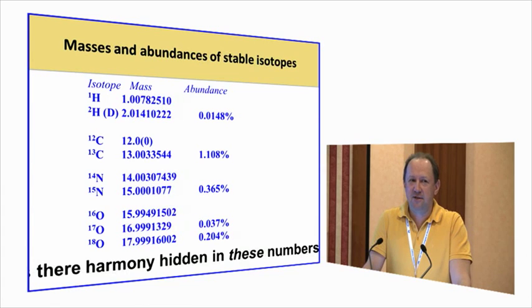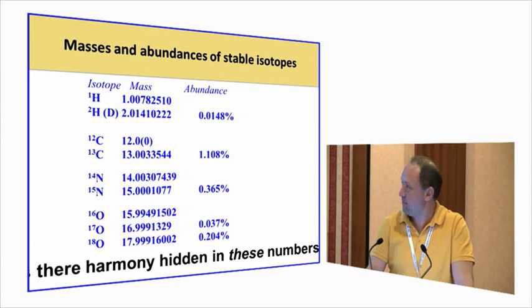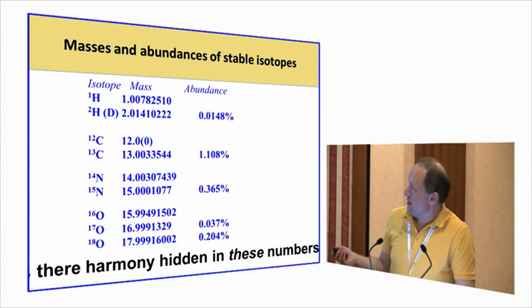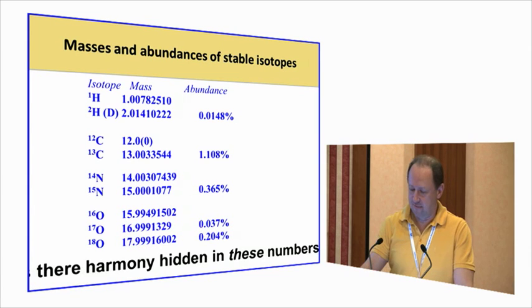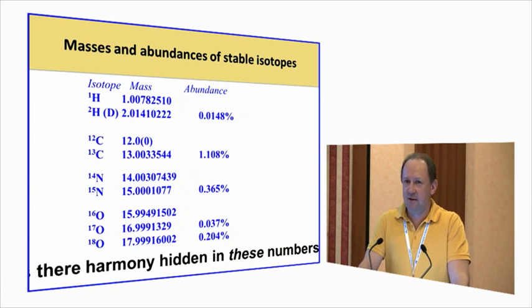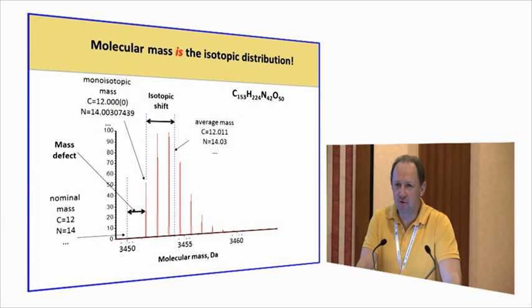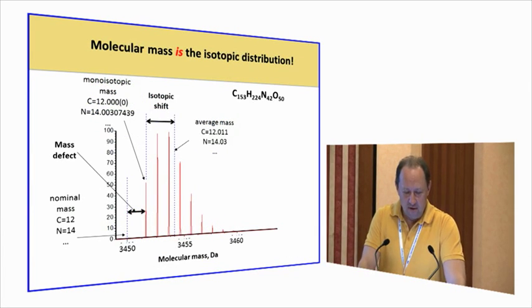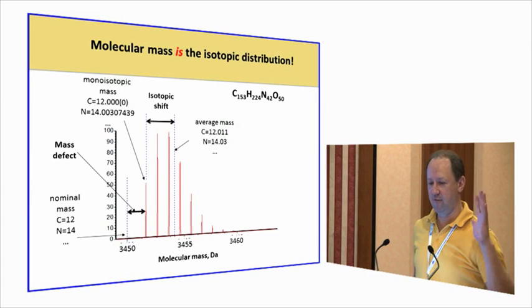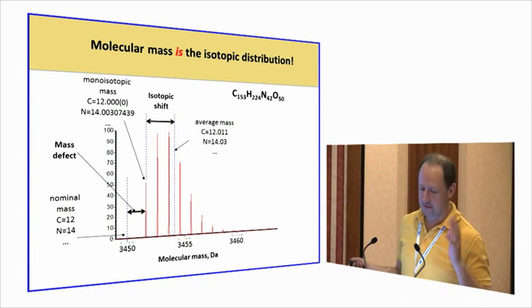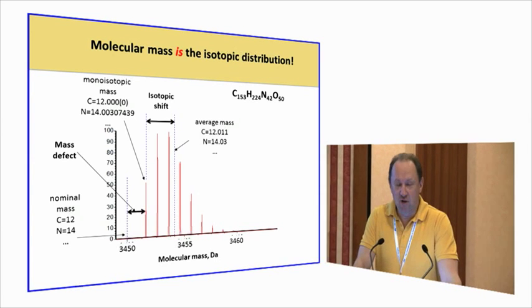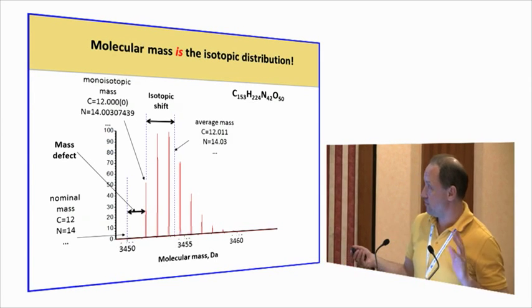This is a table that is known to all mass spectrometrists. We use this table of masses and abundances of isotopes. This is probably the most boring table in mass spectrometry, but it's also quite exciting if you ask a question: is there harmony or symmetry hidden in these numbers? In order to answer this question, we need a mapping. This is a mapping that we came up with.